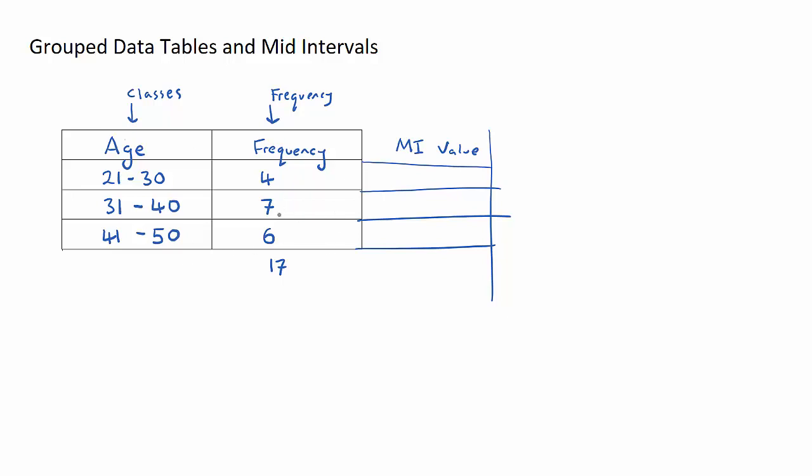Let's say we wanted to calculate the average age of these 17 people. It's going to be quite hard to do. The most people are between the ages of 31 and 40, so you'd expect the average to be roughly the 35 mark. But what happens if all seven people were 31 exactly and all four people were 30 exactly? The average then is going to be pretty close to 30. So with a grouped data table we don't actually know where these seven people lie within the spread of 31 to 40. We need to make an estimate using the mid interval value.